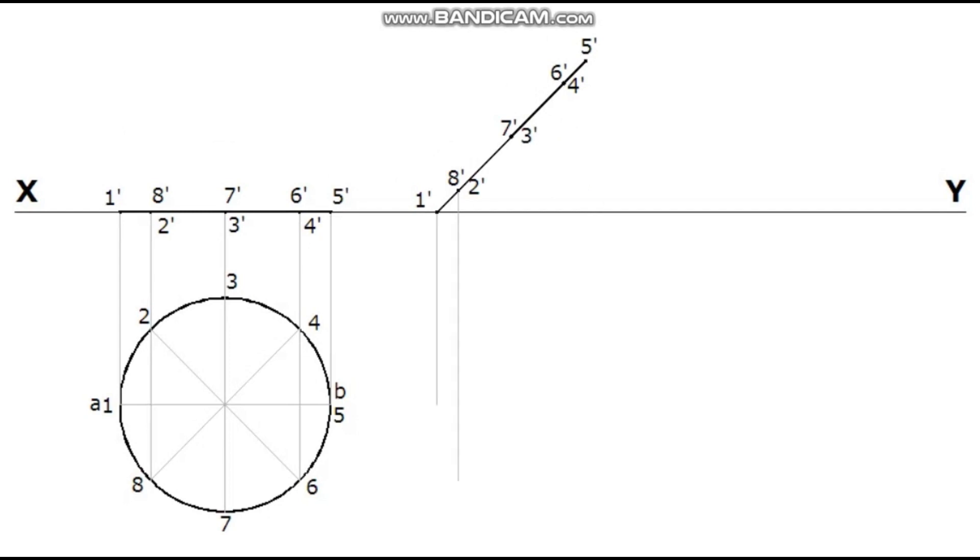Project all the points from the tilted elevation. Project all the points from the first stage plan. Trace the corresponding intersection points. Join all these points with a smooth curve.